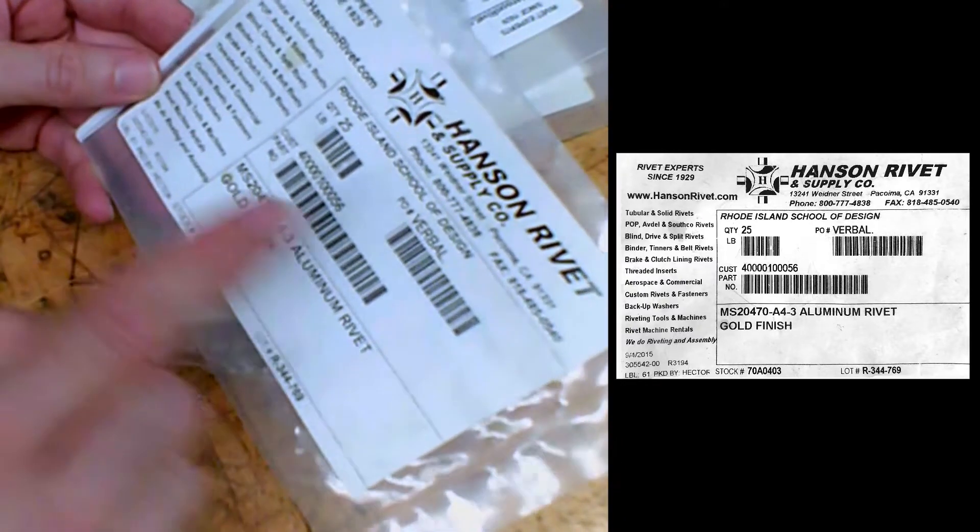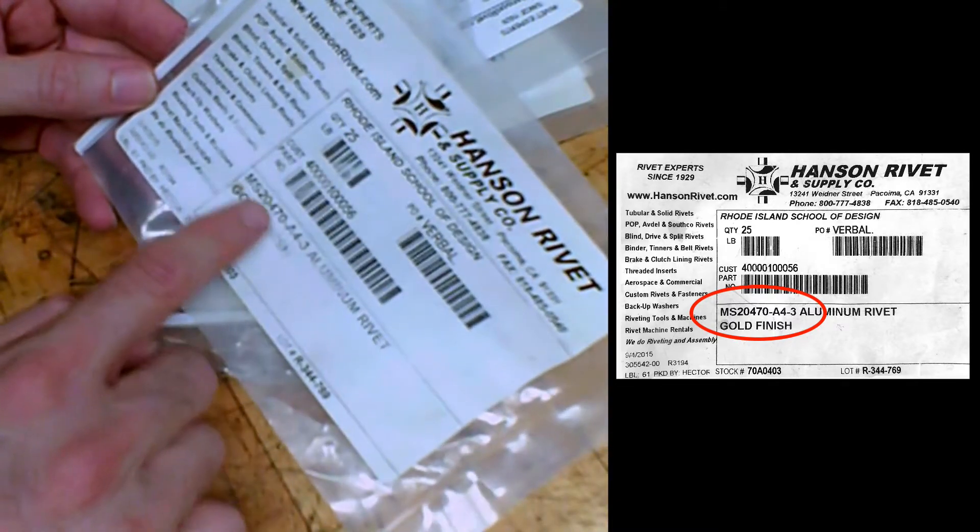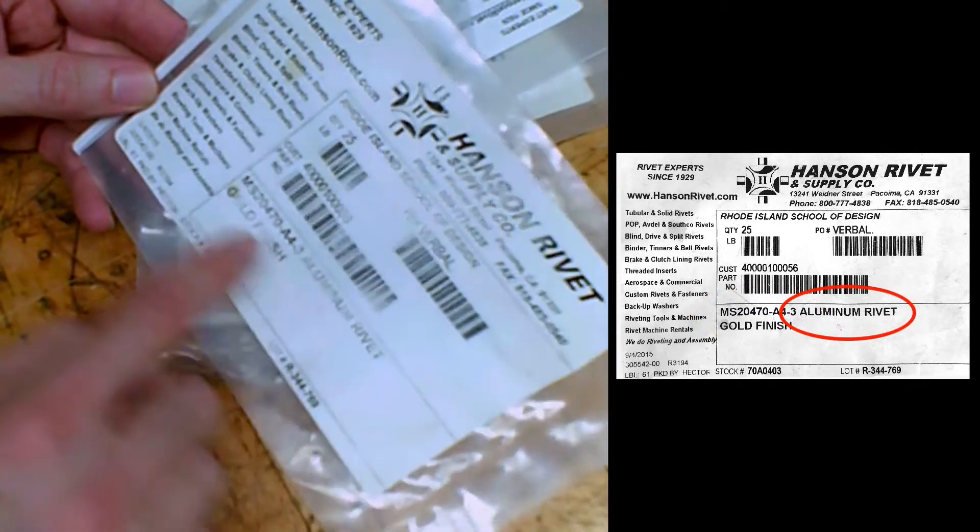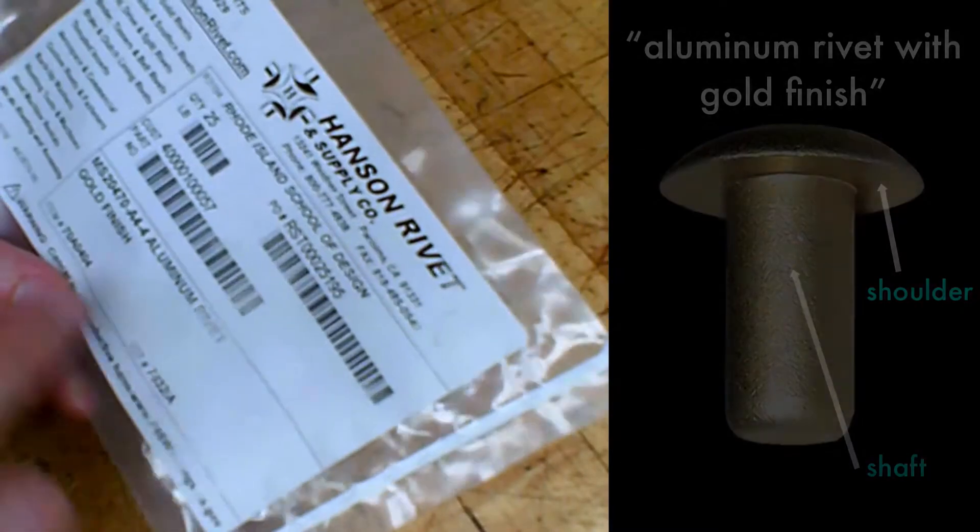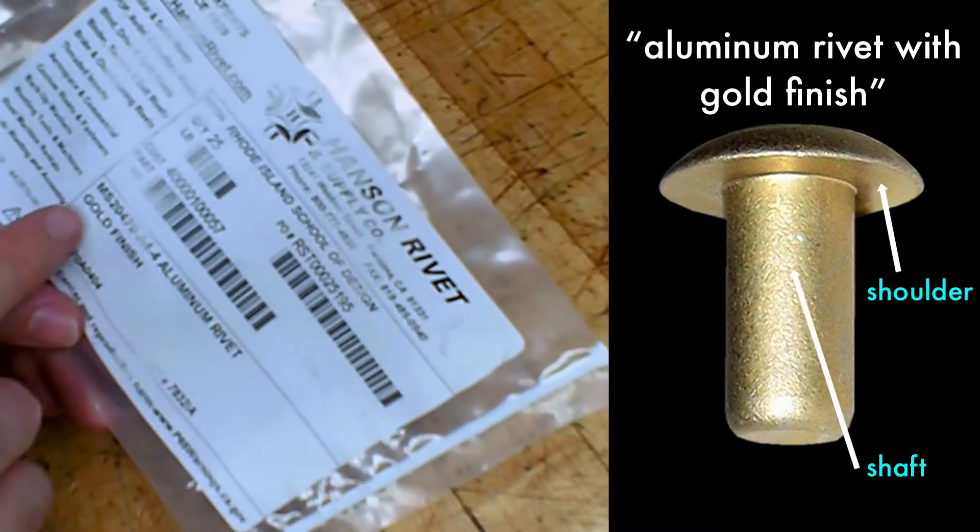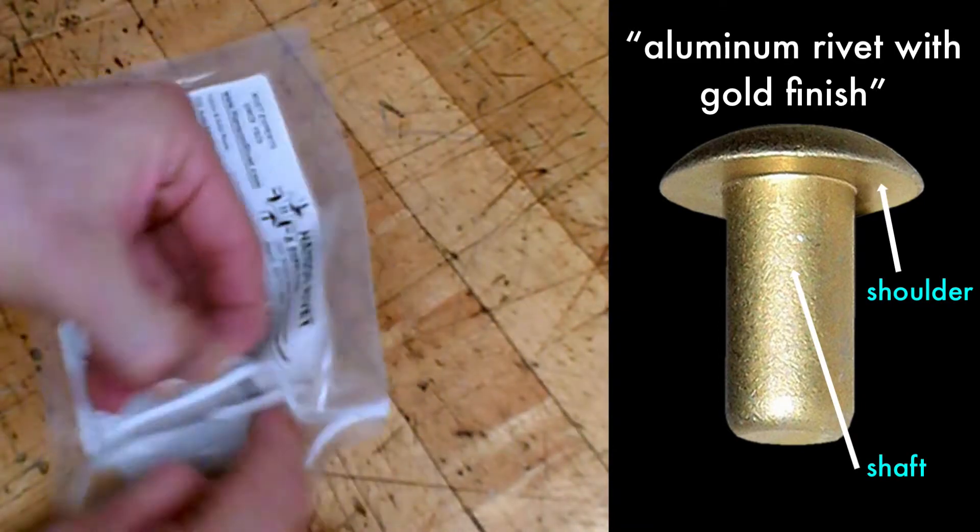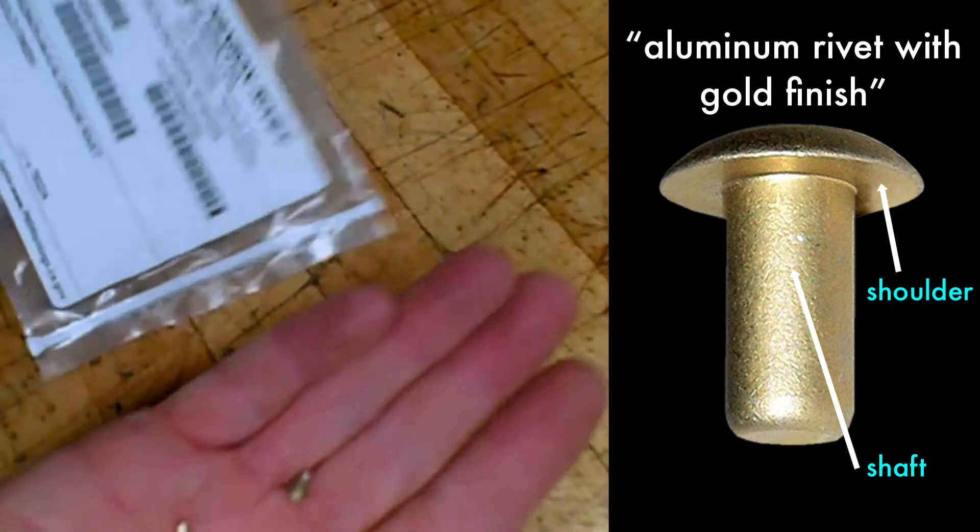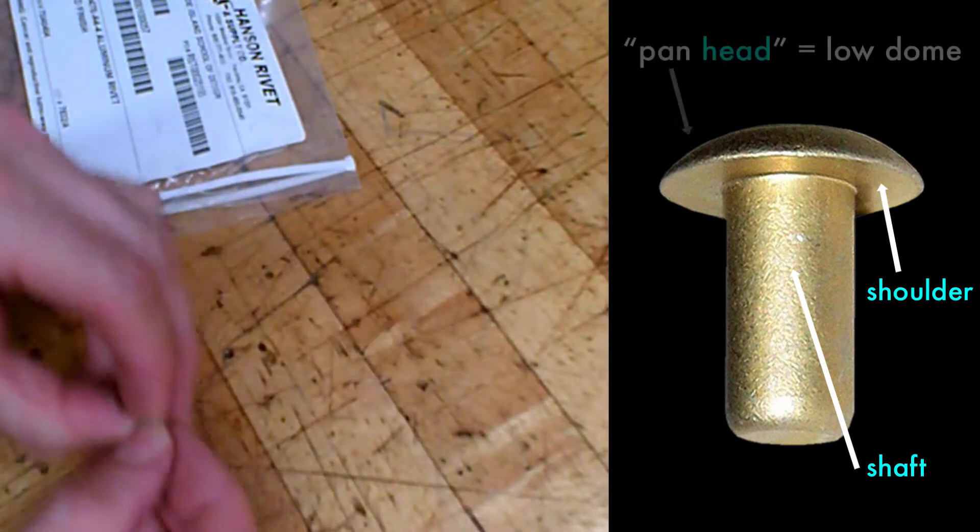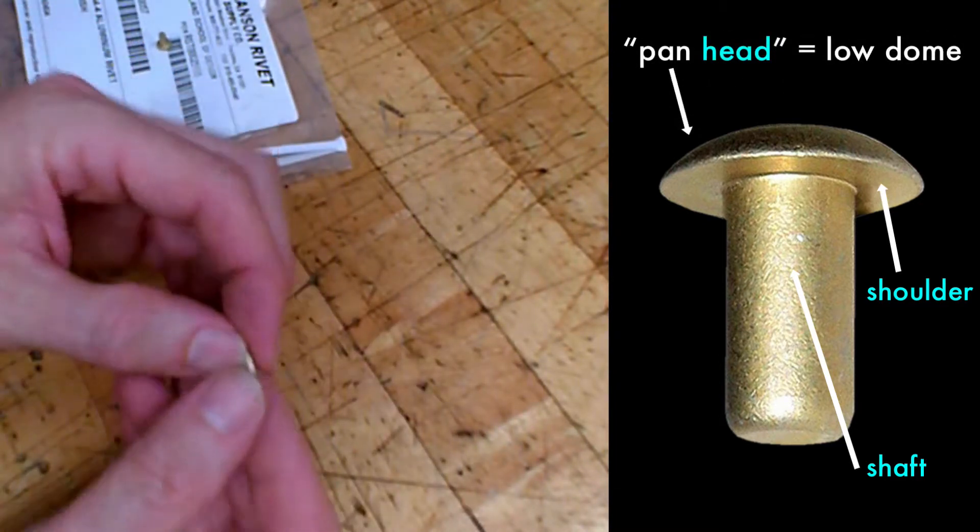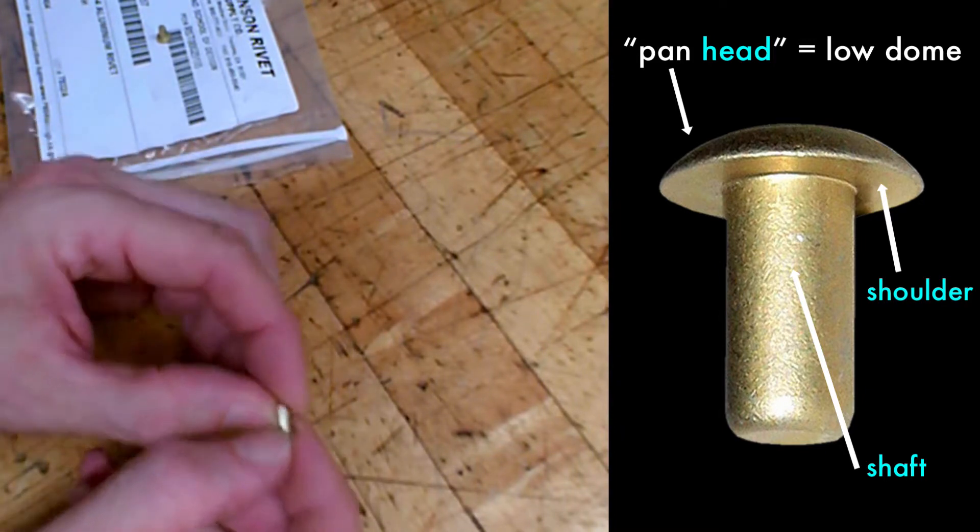Our supply store has a bunch of rivets ready for you from Hansen Rivet, and you should learn what these labels mean. There's lots of information on here, but the tiny little code means something. It's an aluminum rivet with a gold finish, and the other numbers refer to the dimensions. This is an aluminum rivet with a gold finish. So people who don't know better see this and assume it's brass or gold, but it's just an anodized gold surface over aluminum. So these are very soft, which is great for riveting. They have a pan head, a flat shoulder, a shaft.